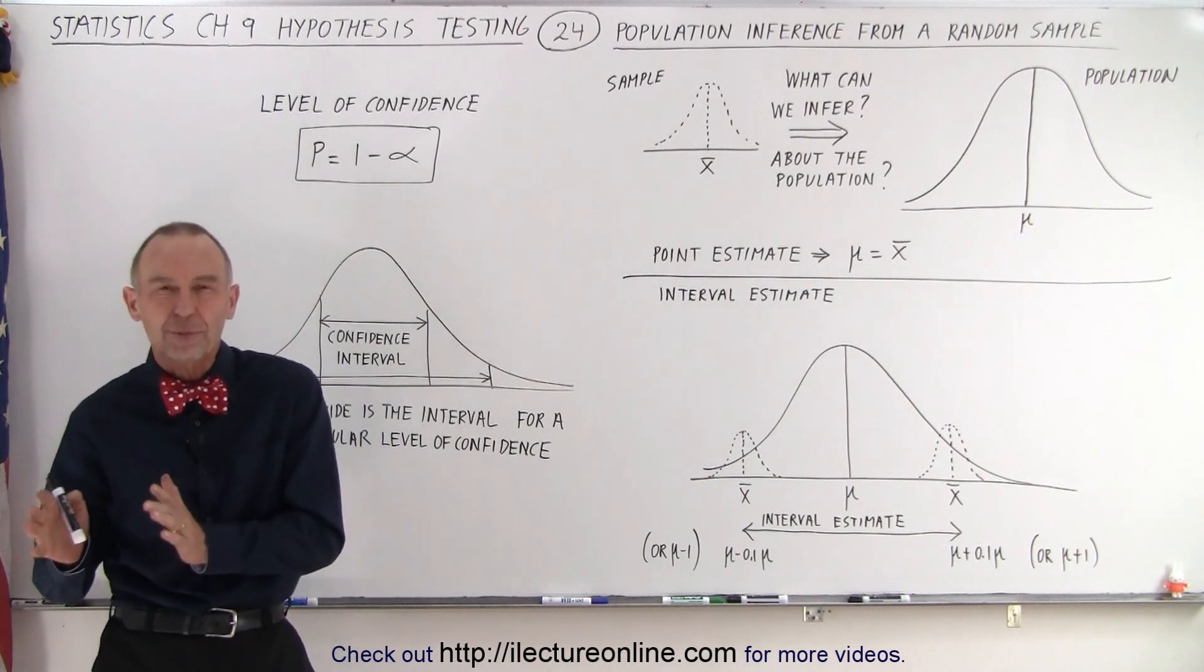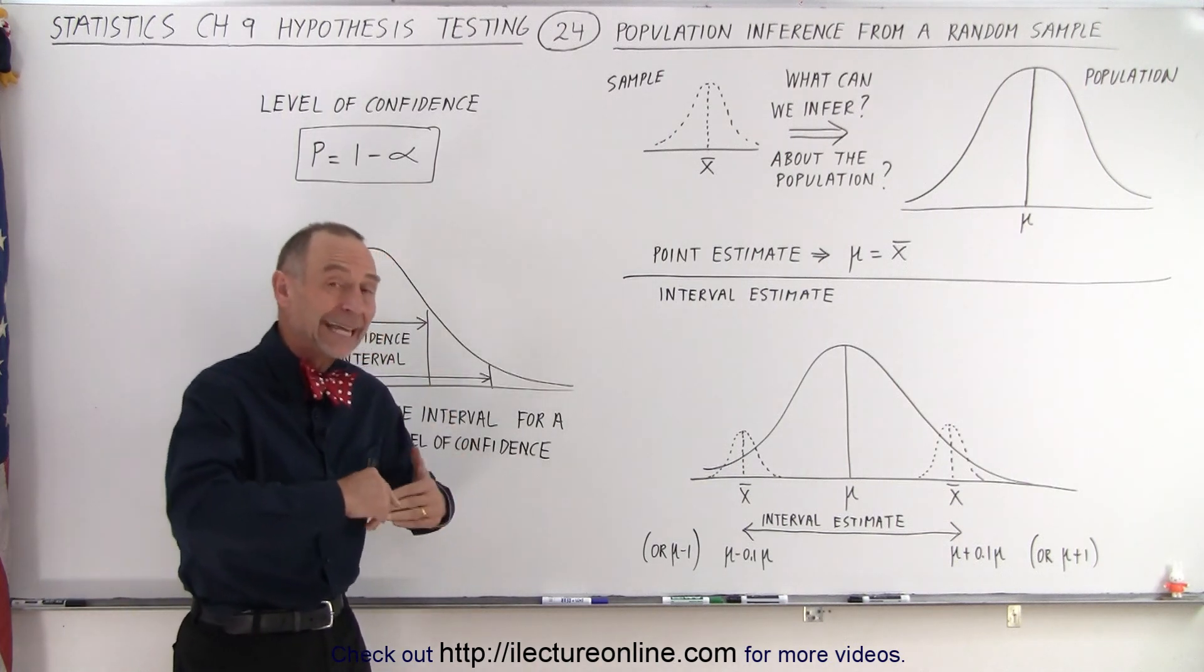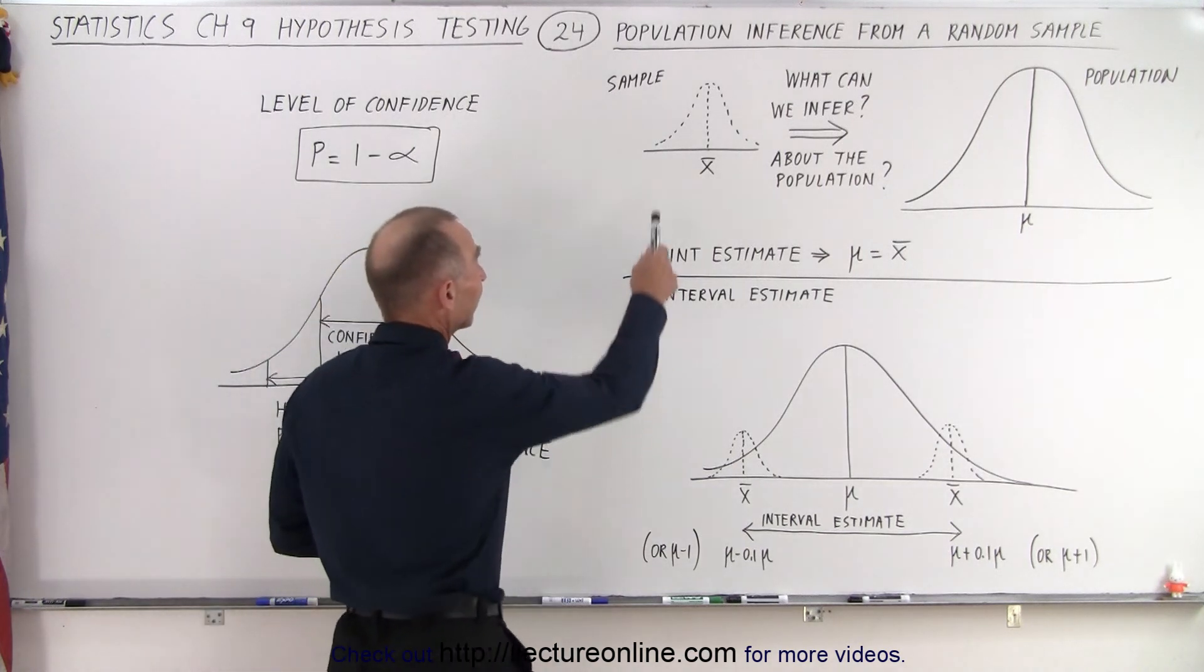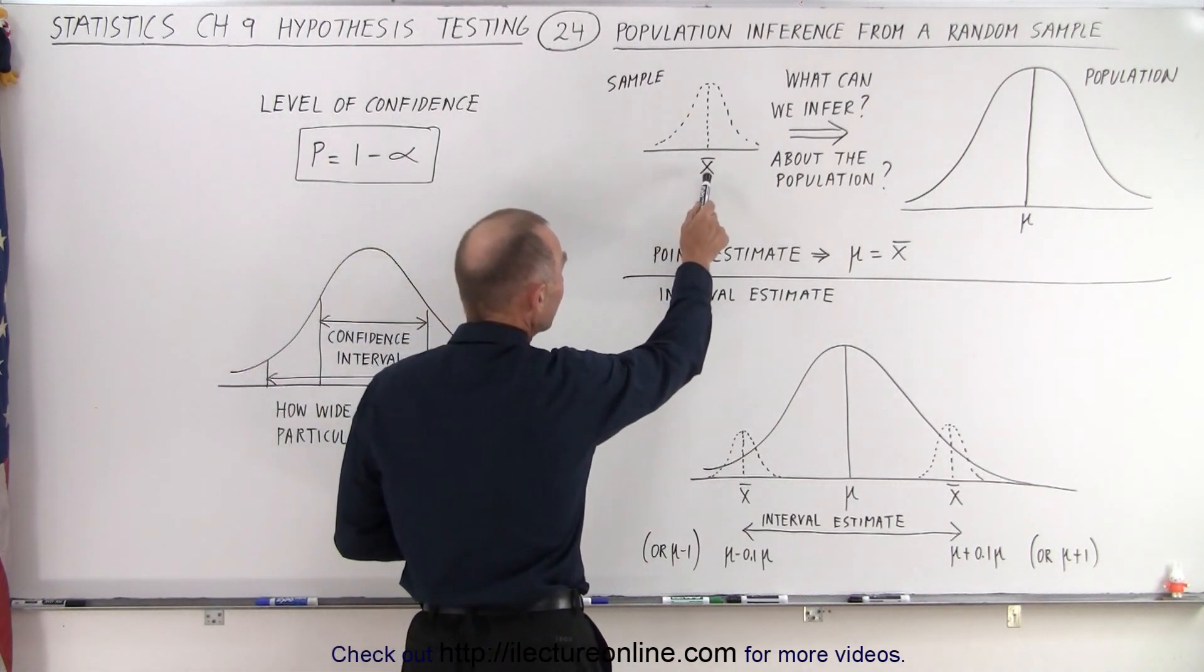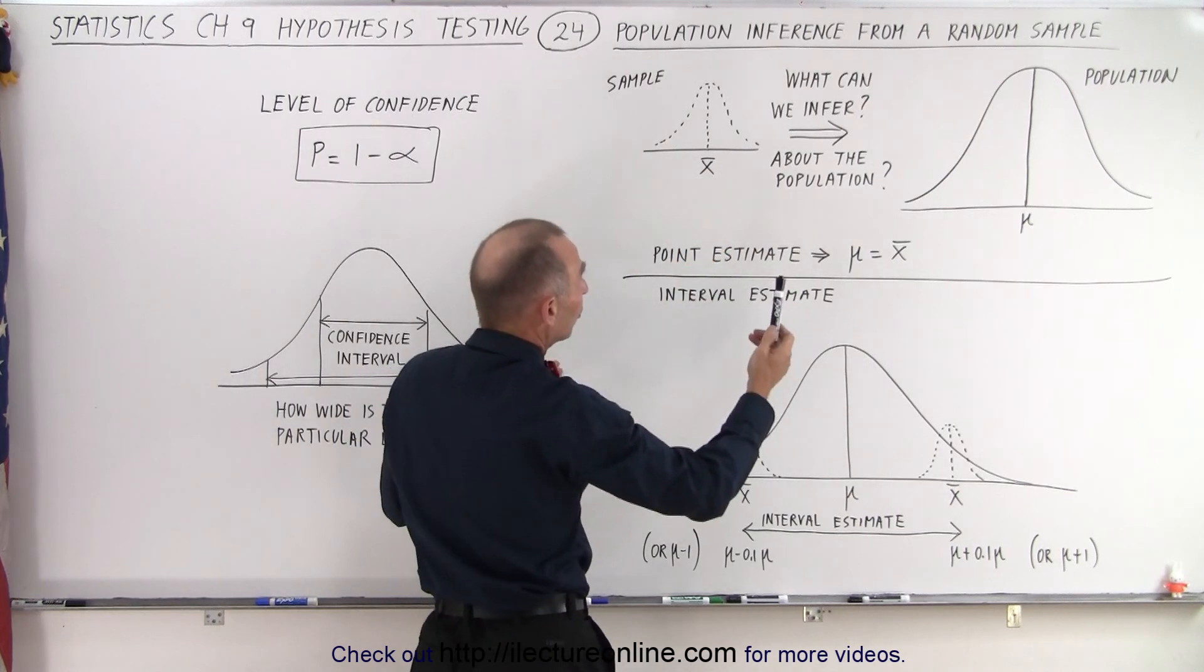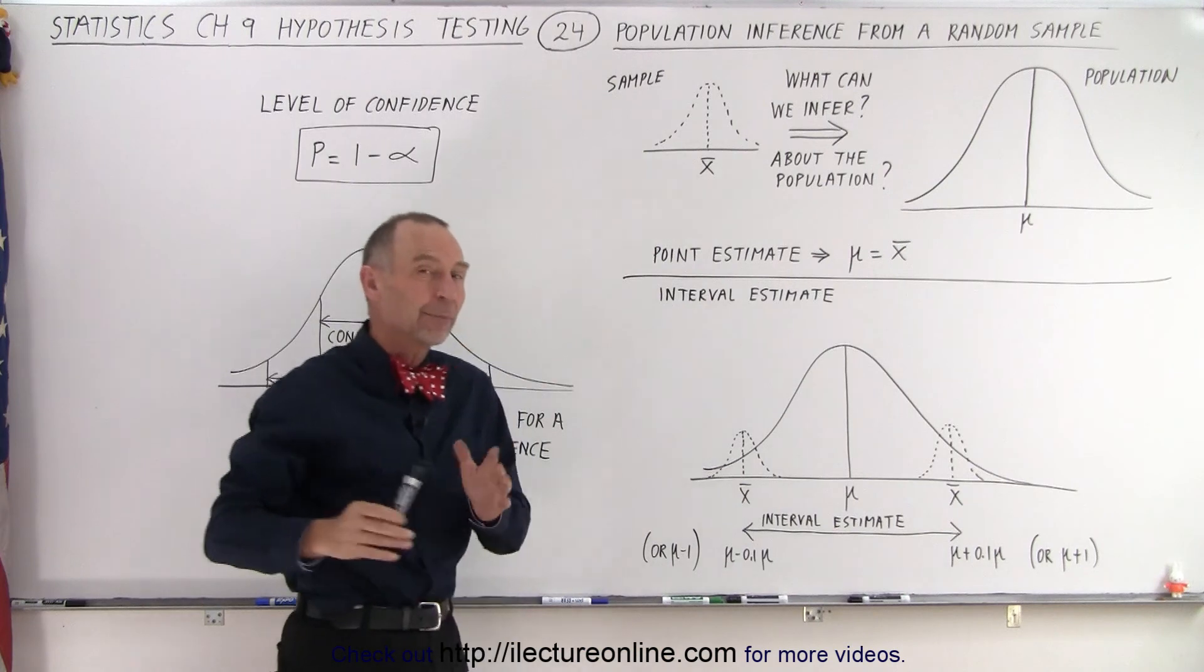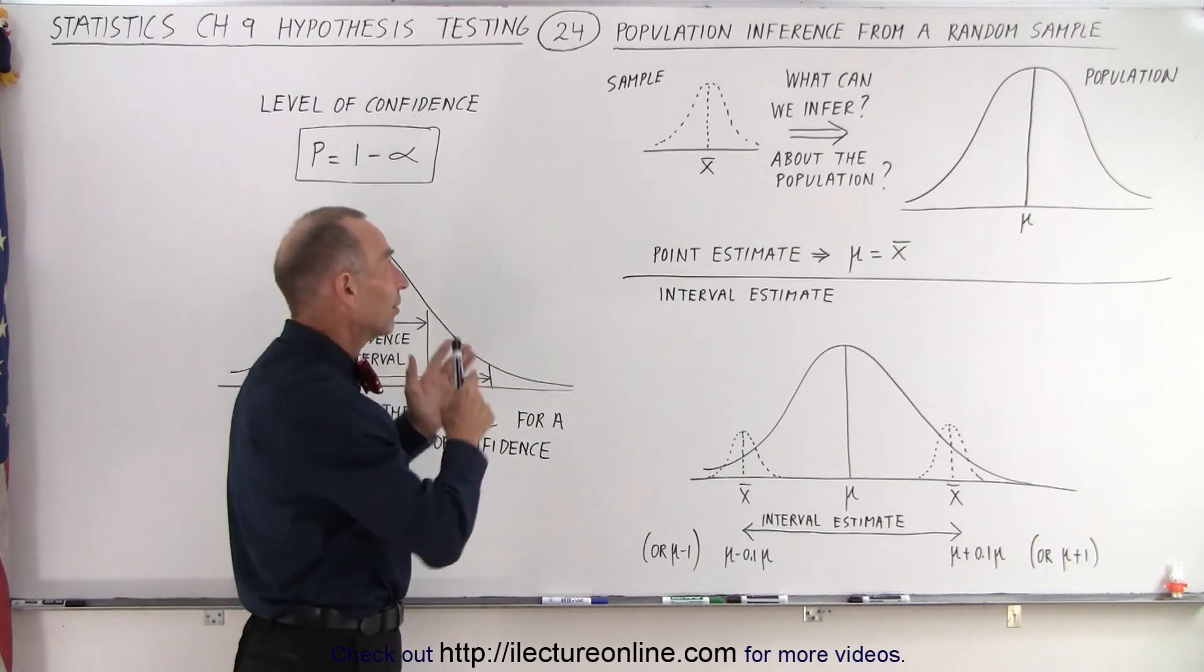We're trying to infer some information about the population by taking a random sample. So the idea then becomes we take a sample, we get the mean of the sample, and then we ask the question: what can we infer about the population based upon what we found about the sample?